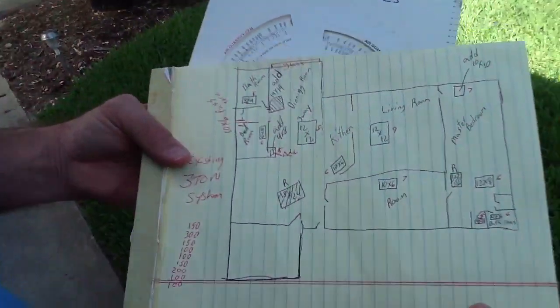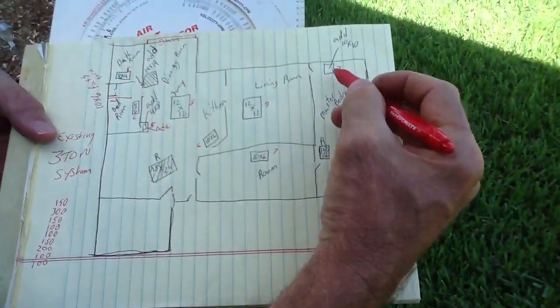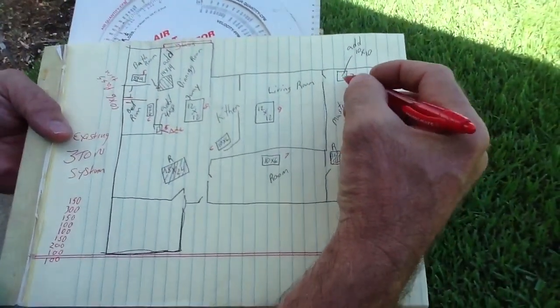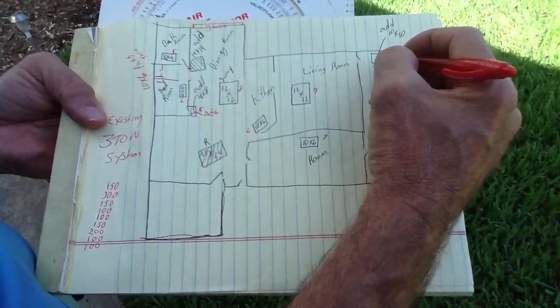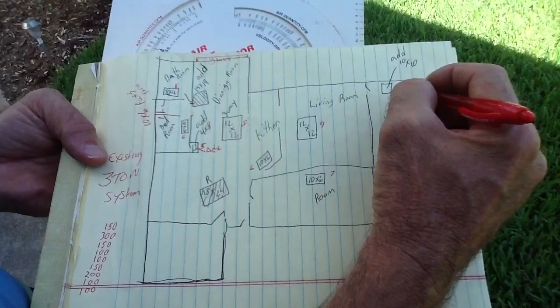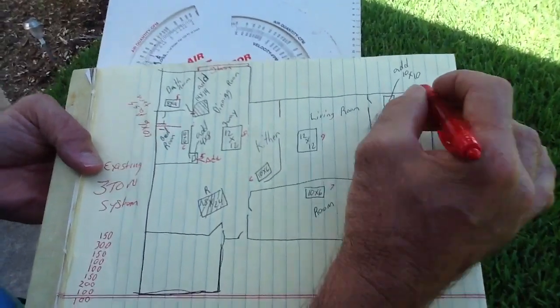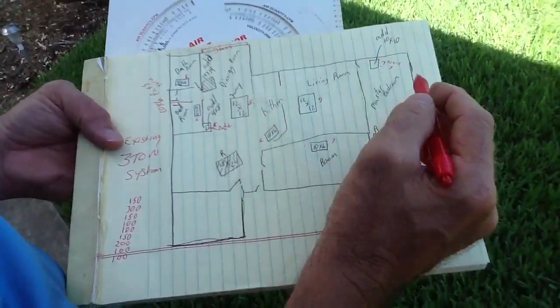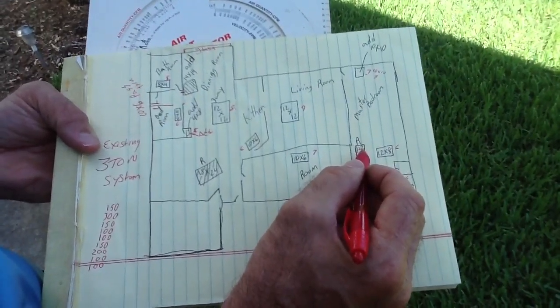In this particular case we have the master bedroom, we're actually going to add a 10x10 three-way. We always want to throw as much perimeter area as possible because in this room there's a return here, a 12x12 return.